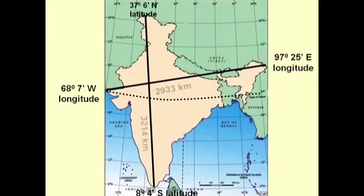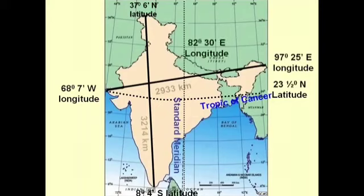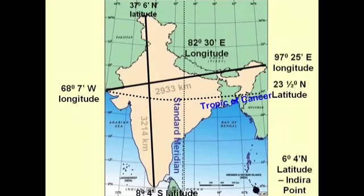India is located in both the eastern and northern hemisphere. From three sides, our country is bounded by three big seas. On one side it is the Arabian Sea, the eastern part is covered by the Bay of Bengal, and in the middle there is the Indian Ocean. The Indian Ocean is named after our country because the maximum boundaries of our country lie with this ocean.